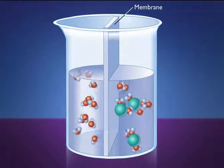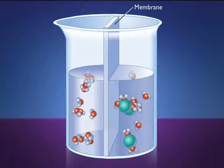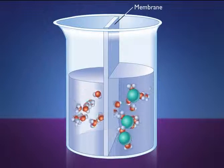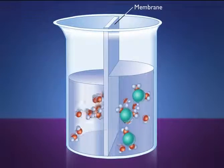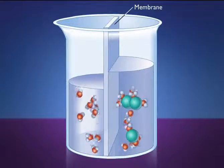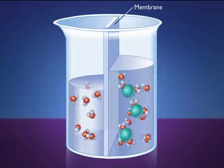With fewer free water molecules on the right-hand side, there is now a net movement of water molecules down their concentration gradient to the side with the urea molecules. Because more water molecules are moving into this area than are leaving, the water level on the right side will rise.